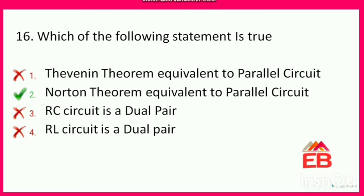Next: which of the following statements is true? Options are: Thevenin theorem equivalent to parallel circuit, Norton theorem equivalent to parallel circuit, RC circuit is a dual pair, or RL circuit is a dual pair. Thevenin is a voltage source in series with resistance — not parallel. Norton is a current source in parallel with resistance, so option 2 is correct. Also, RC and RL are not dual pairs; LC circuit is a dual pair.